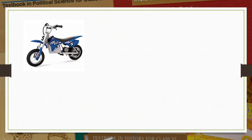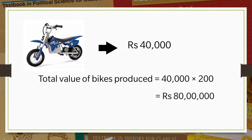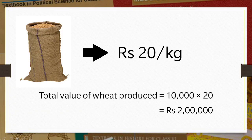Economists suggest that the value of the goods and services be added. How do we find out the value? If the bike costs rupees 40,000, the total value of bikes produced will be 40,000 into 200, that means rupees 80 lakhs. Similarly, if wheat sells at rupees 20 per kg, then the value of wheat will be 10,000 into 20 equals 2 lakhs. Similarly, the value of all goods and services in the three sectors are calculated and added up.